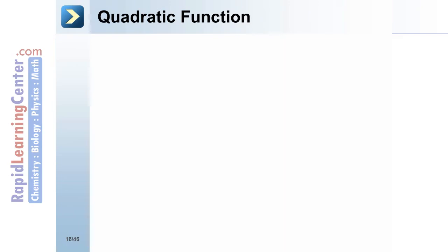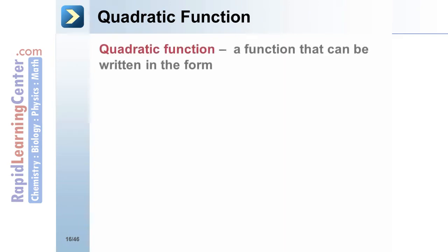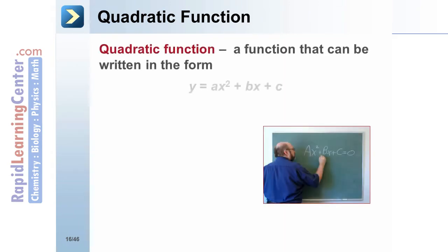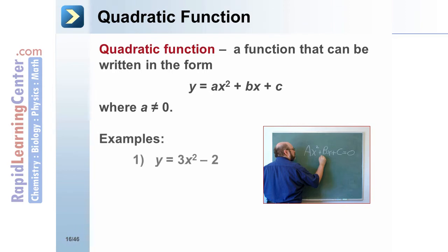A quadratic function is a function that can be written in the form y equals ax squared plus bx plus c, where a cannot equal 0. Examples of quadratic functions include y equals 3x squared minus 2, y equals x squared, and y equals negative x squared plus 5x plus 7.